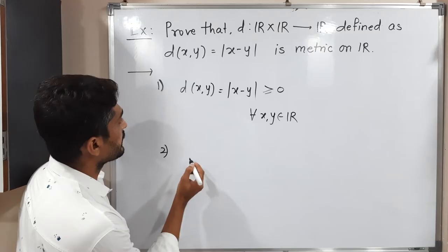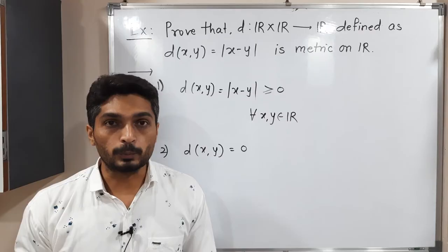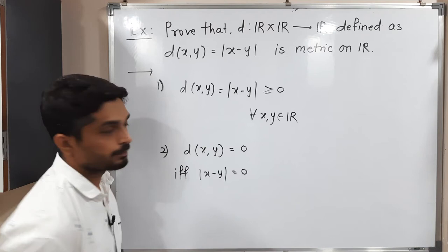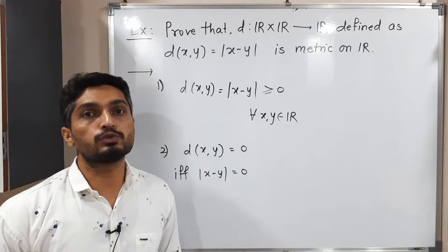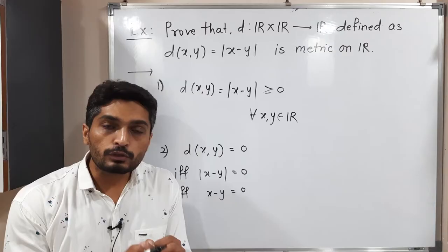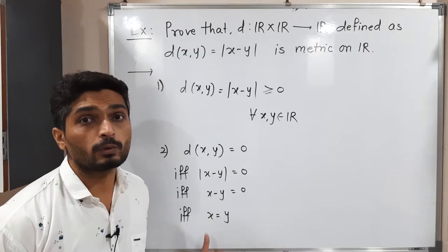The second property: d(x, y) = 0 if and only if x = y. Starting with d(x, y) = 0, by definition this means |x − y| = 0. If the absolute value of any number is 0, that number itself is 0, since |0| = 0. So |x − y| = 0 implies x − y = 0, and shifting y to the other side gives x = y. Thus d(x, y) = 0 if and only if x = y. The second property is proved.